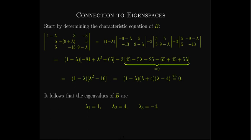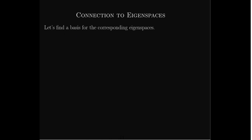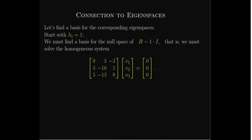I'm not really interested in the eigenvalues of A for this example, but if I want to find them, I just multiply those eigenvalues by one-half. Let's find the eigenvectors. Remember, the eigenvectors of B are the same as the eigenvectors of A, so if I find a basis for an eigenspace of B, it's also a basis for an eigenspace of A. I'll start with λ₁ equals 1.